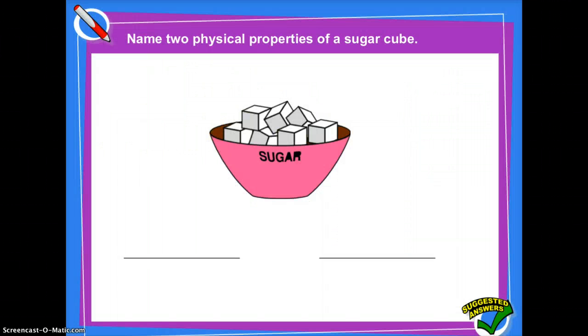Okay, so we have some sugar cubes here, and I want you to name at least two physical properties of the sugar cubes. Why don't you go ahead and pause the video, and then when you resume, we'll look over the answers. Alright, so some physical properties that you could have included were that sugar cubes are solid, they're white, and they're soft.